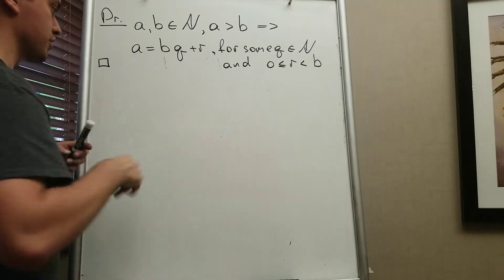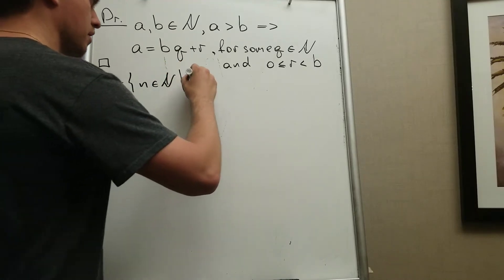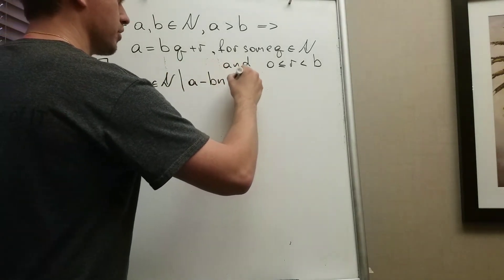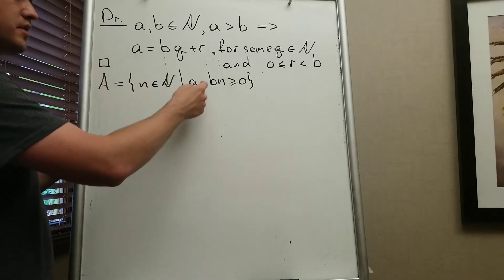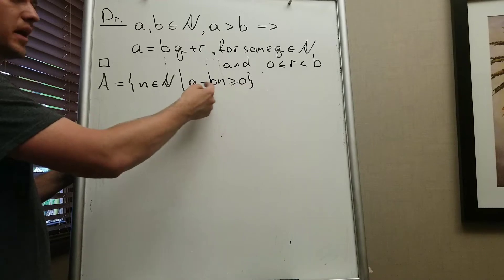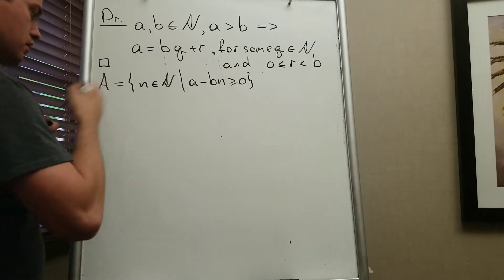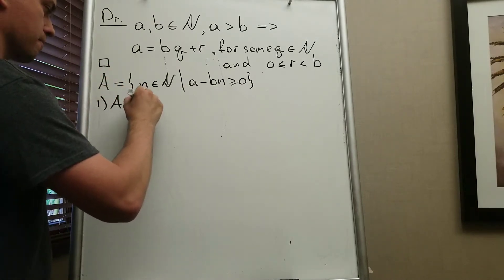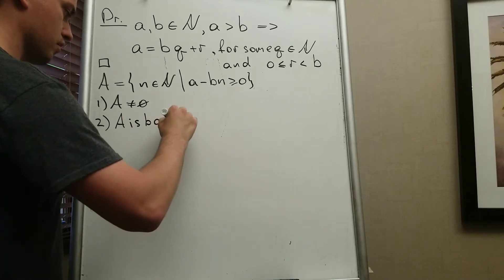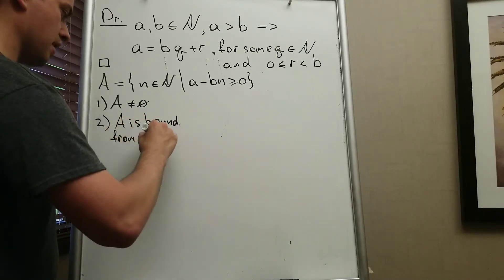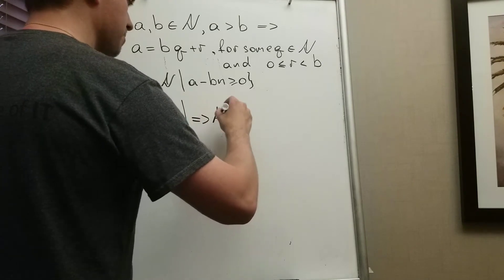To do this, I'm going to create a subset of natural numbers: let A = {n ∈ ℕ : A − Bn ≥ 0}. I'm taking all n such that this difference is non-negative. Since A and B are finite, this set will be finite. I want to show first that A is non-empty, and second that A is bounded from above. Once I show both, I will get that A has a maximum element.